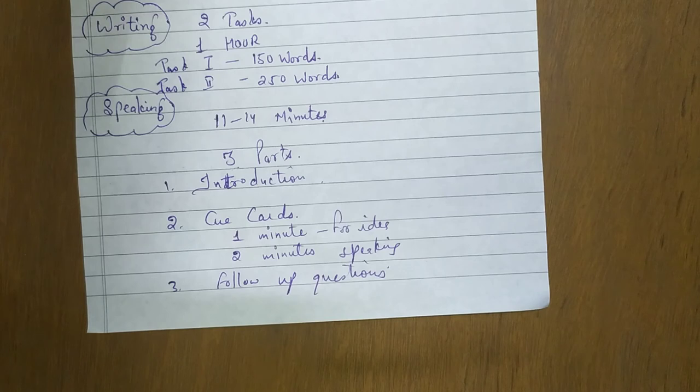The part one introduction: the examiner asks about you, your life, about your family, about your hobby, and anything. The number two is cue card. In this, you have given three minutes. The one minute you can think about the topic.